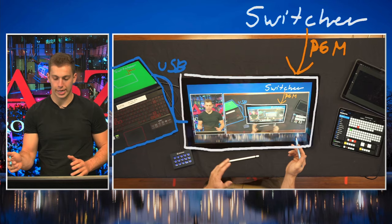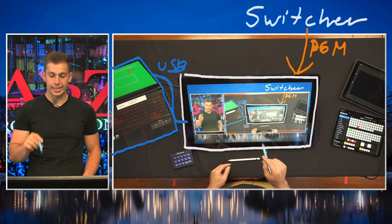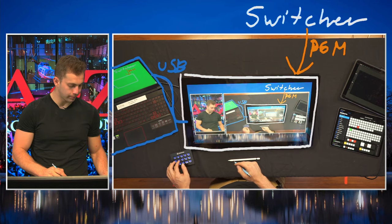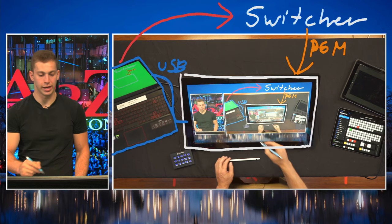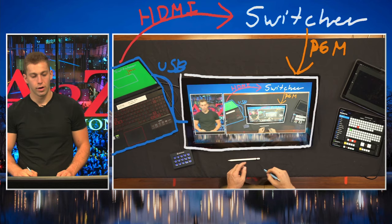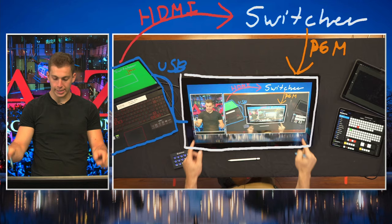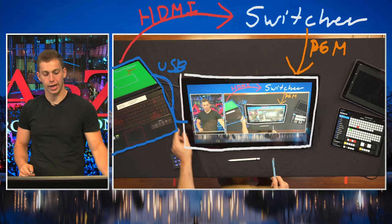Last thing we need to do is get the feed. You see the green screen happening over here? That green screen is being sent into the switcher. We need a final cable going from here into the switcher, and that is an HDMI cable - an HDMI running from the laptop over to the switcher. We have the switcher giving us a program feed into the monitor, and then the USB cable running from the touch screen into the laptop.